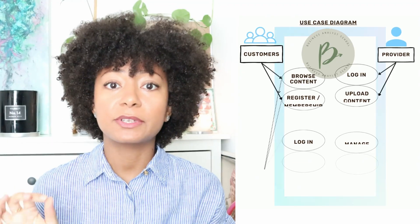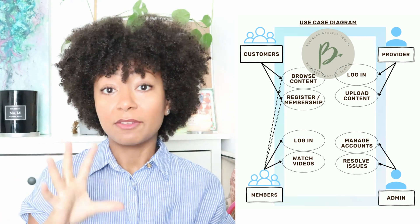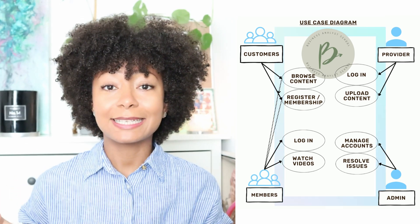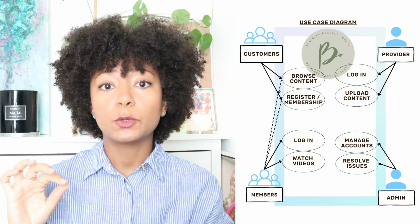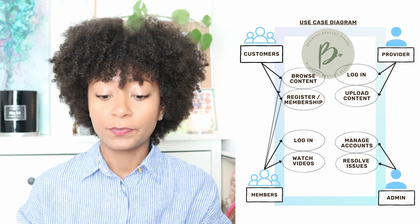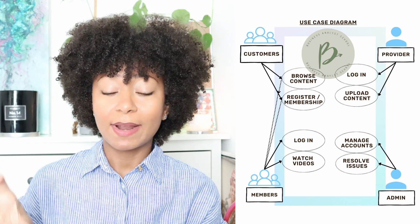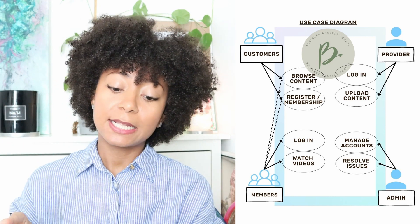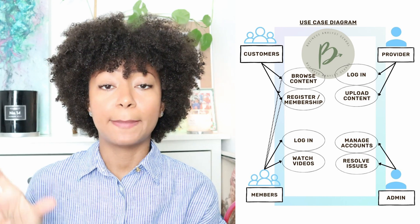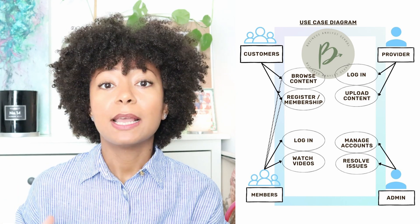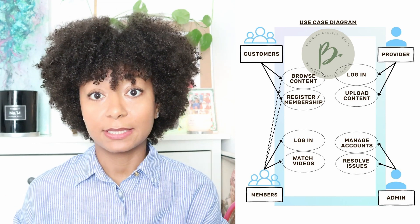For the purpose of this video, a system can be a website, a software component, an application, a business process, or many other things. You represent a system boundary with a rectangle on your use case diagram. The rectangle shape represents the system boundary, with the name of the system placed at the top. Anything within the rectangle is what happens inside the system, and anything outside that boundary represents what happens outside the system — this is where actors and other interacting systems are placed.